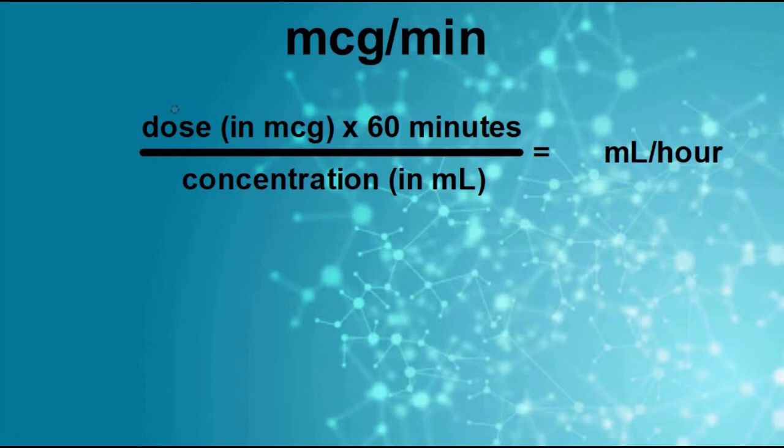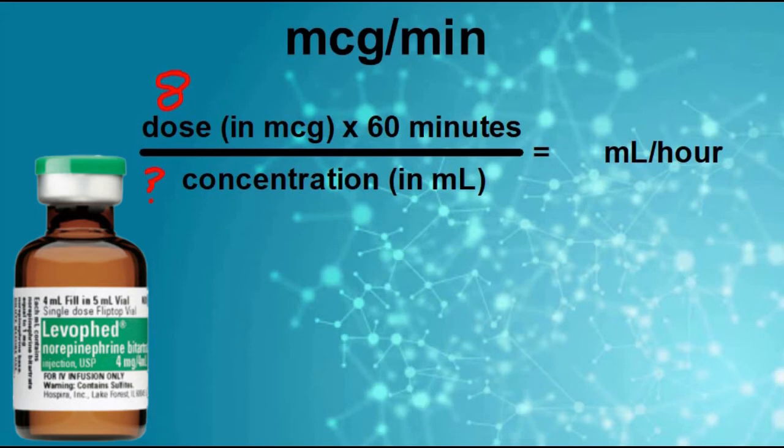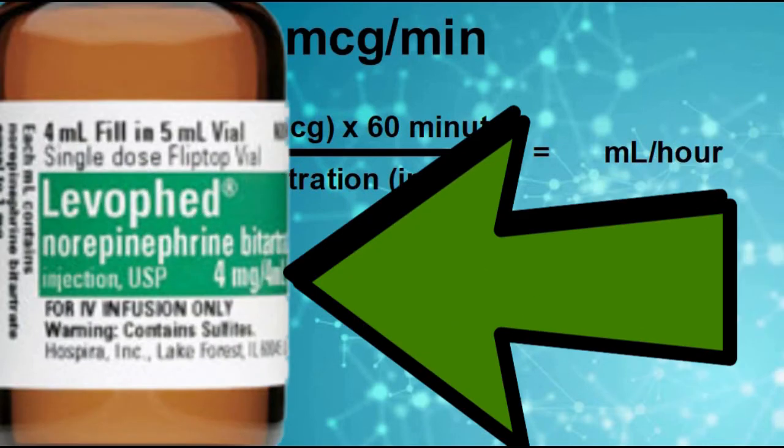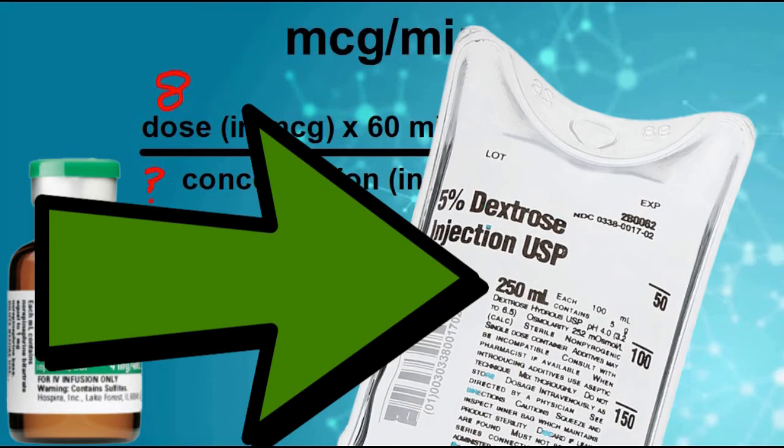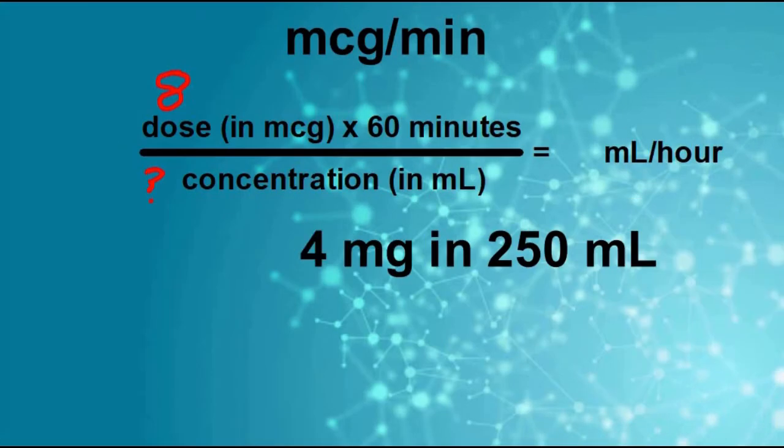Let's say our starting dose here is going to be eight micrograms per minute. Do we know what the concentration is yet? Not yet. That's where we're going to have to do a tiny bit of math. If we put this bottle of levophed, which has four milligrams in it, in a bag of D5W that has 250 milliliters, then we have four milligrams in 250, but remember our dose is expressed in micrograms. We're going to have to convert.